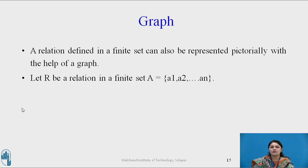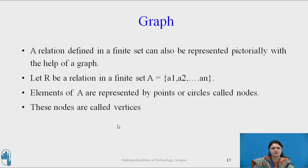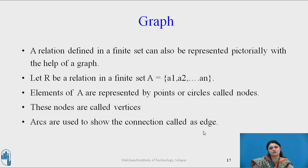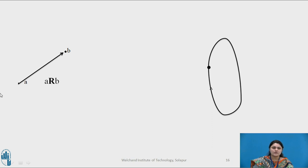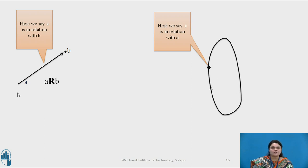Now let us move to graphs. Let R be a relation in a finite set A — A1, A2, ..., AN. Elements of A are represented by points or circles called nodes, also called vertices. Arcs are used to show connections between edges. For example, vertex A connected to vertex B means the relation is from A to B. A connected to A itself is a loop, meaning A is in relation with A. This is a directed graph.